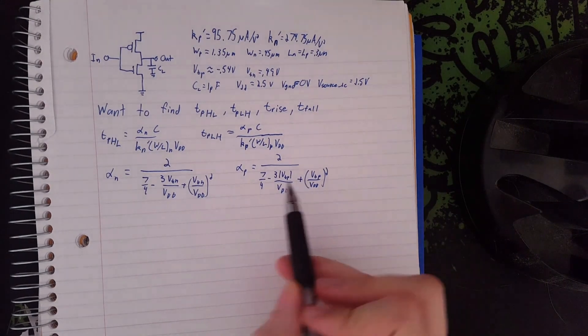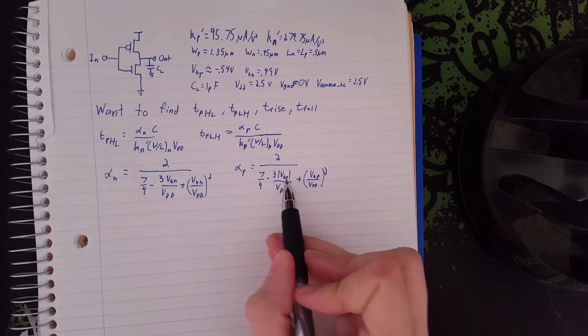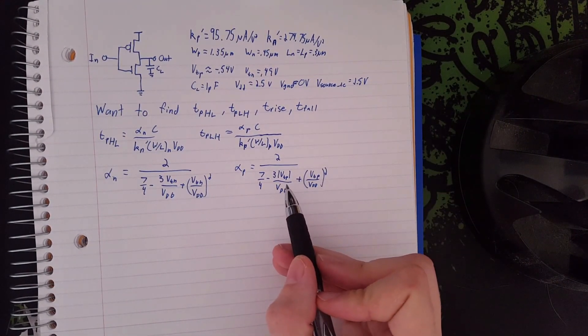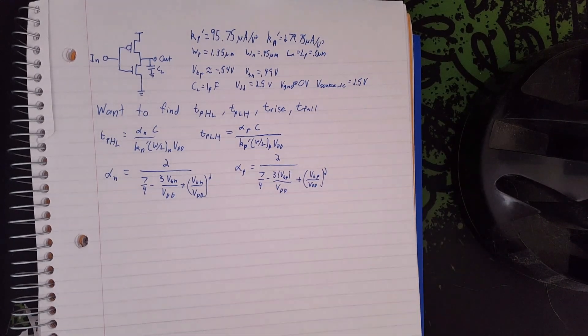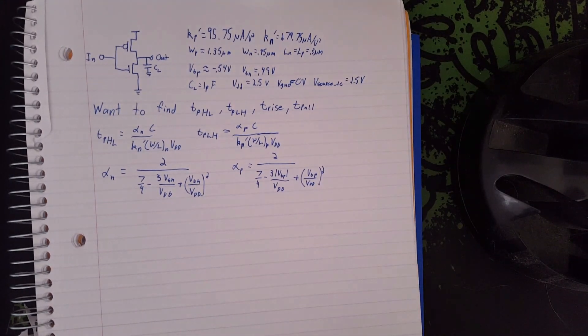As you can see, they're very similar equations, but you need to make the negative V-threshold for the PMOS positive, and otherwise they're the exact same equations.